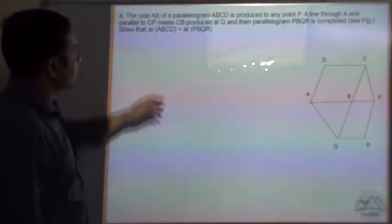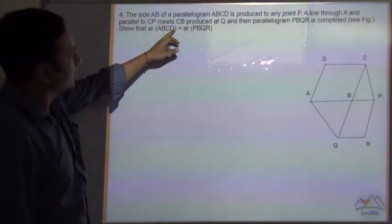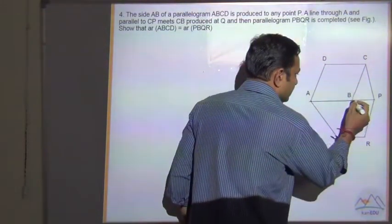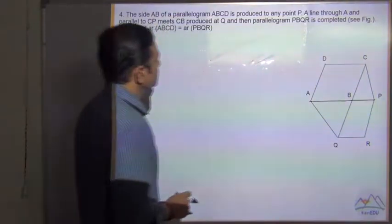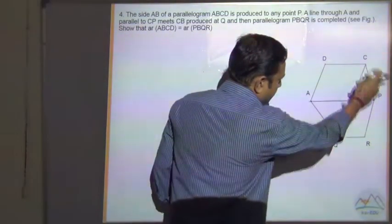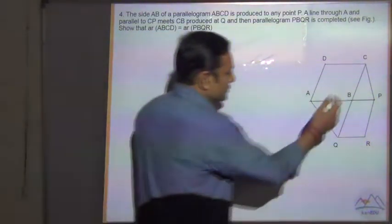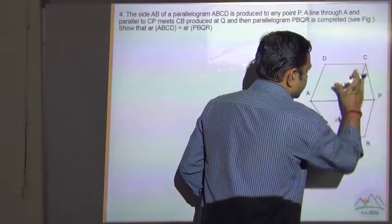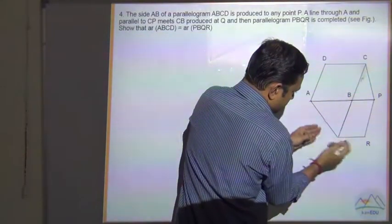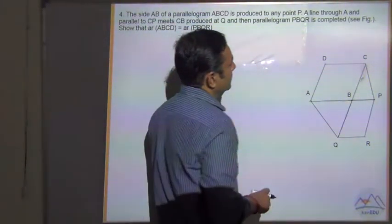Question number 4. Side AB of a parallelogram ABCD is produced to any point P. So side AB is extended at some point P. A line through A and parallel to CP meets CP produced, so CP is extended, and a parallel line to CP meets at point Q. And then parallelogram BPQR is completed.